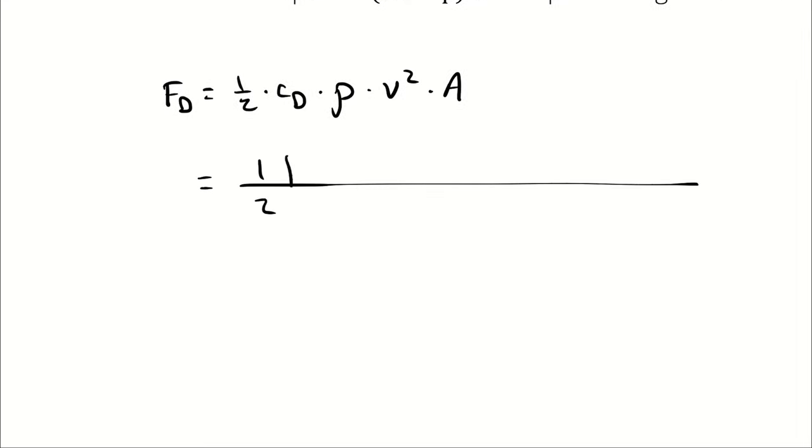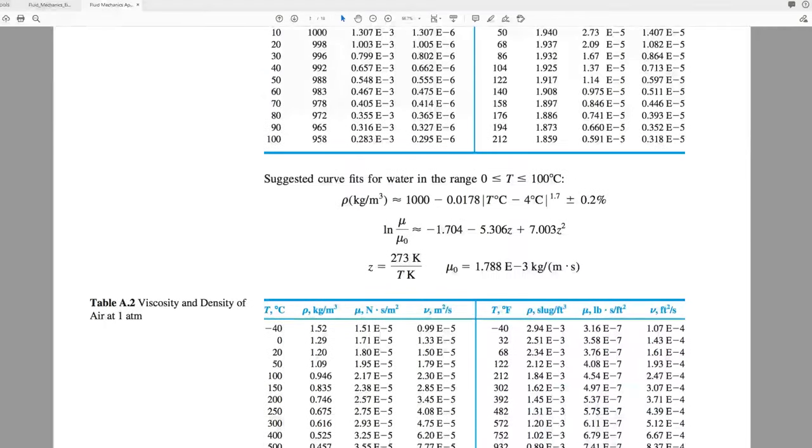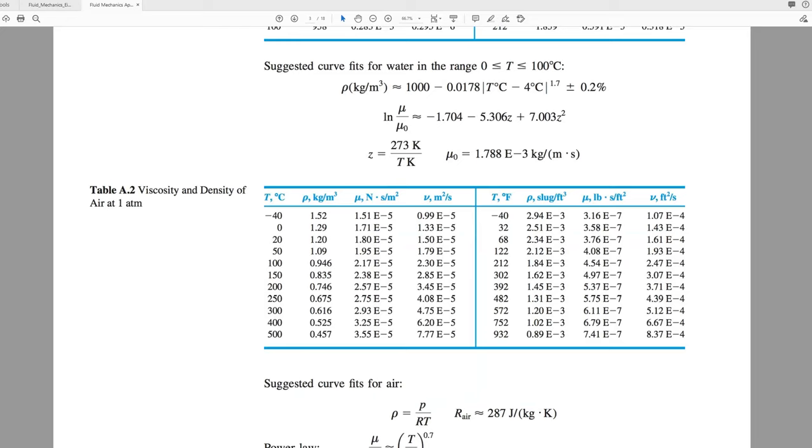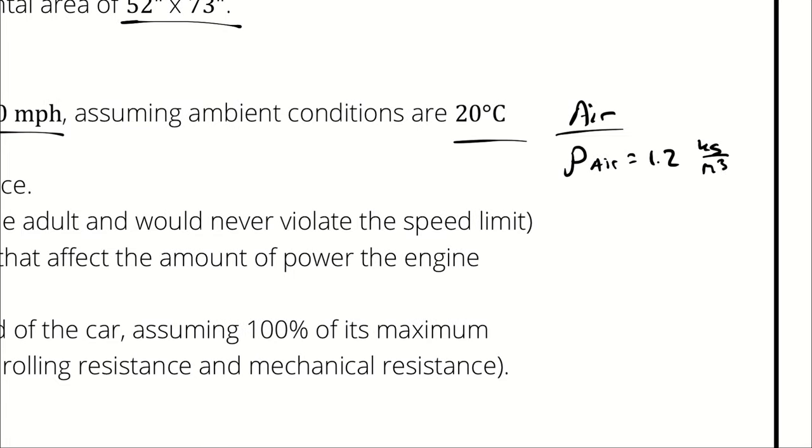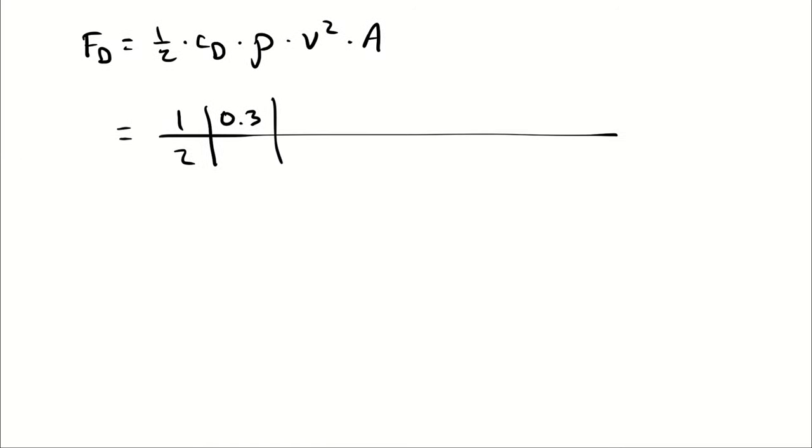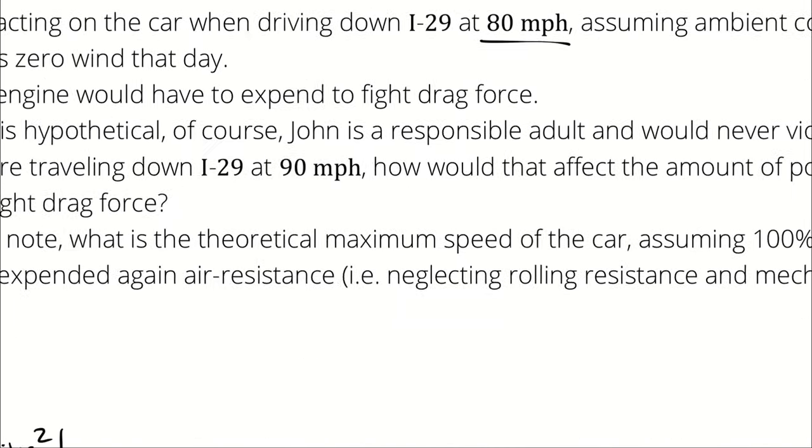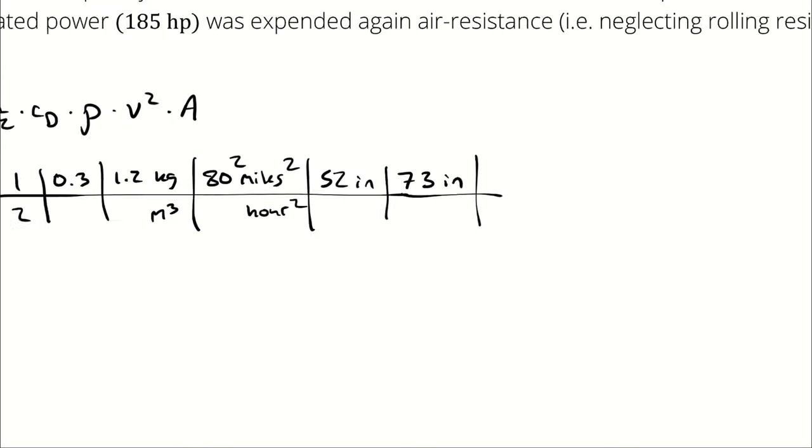So that's going to be one-half times 0.3 times the density of air, which I can get from table A2. If the ambient conditions are 20 degrees Celsius and 1 atmosphere, that means the density of air is going to be 1.2 kilograms per cubic meter. And if I need it, a kinematic viscosity of 1.5 times 10 to the negative fifth. So I'm using a density of 1.2 kilograms per cubic meter, a velocity of 80 miles an hour, then I square everything, and a cross-sectional area from the front of 52 inches by 73 inches.